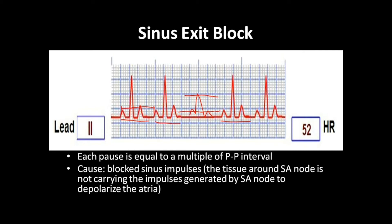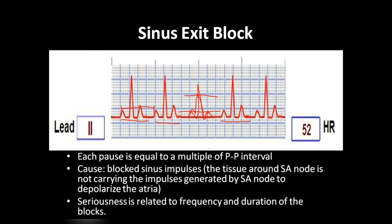The cause of this kind of sinus exit block is usually blocked sinus impulses. The tissue around the sinoatrial node is not carrying the impulses generated by the SA node to depolarize the atria. This results in a missing wave — a complete missing of the PQRST wave is seen in this kind of block.